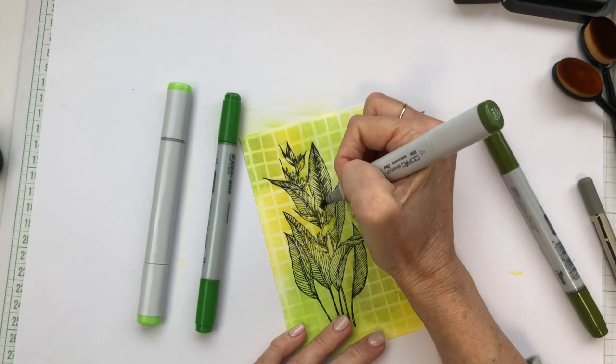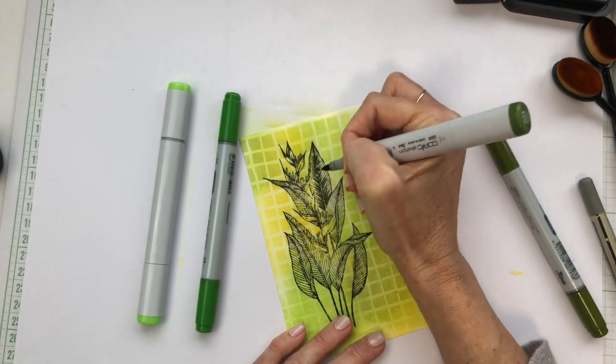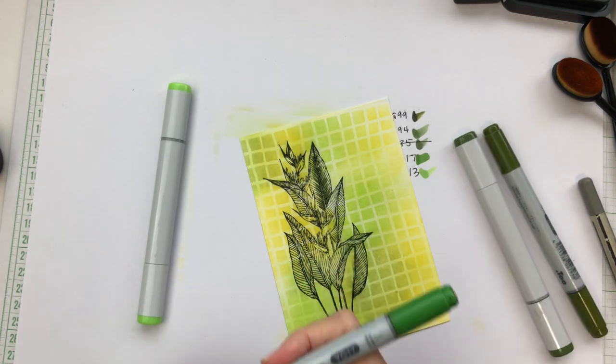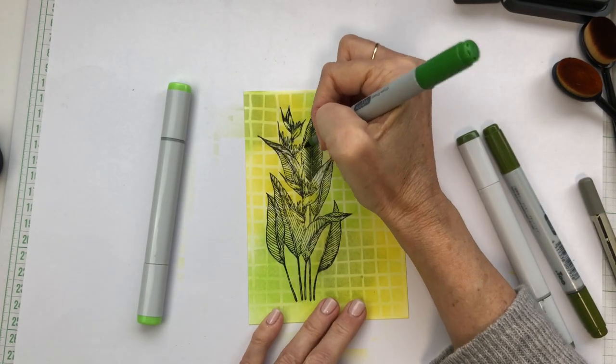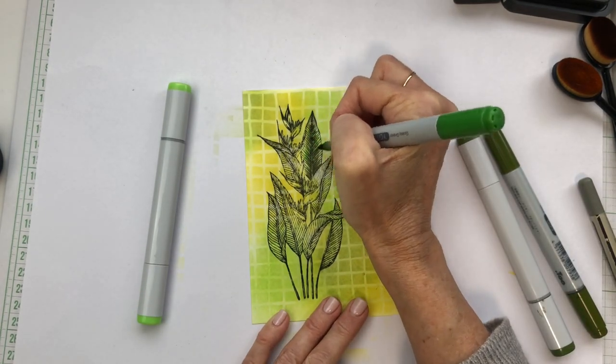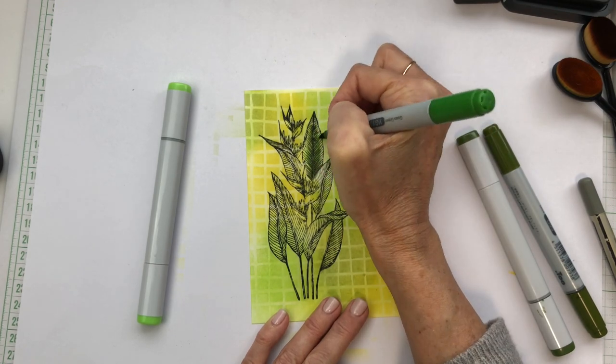I've marked onto my backing paper the colors that I'm using for today's image. You can see that I've crossed one of those greens out because when I tried the selection that I had in my hand, I felt that two of them were so similar that it wasn't worth doing both.